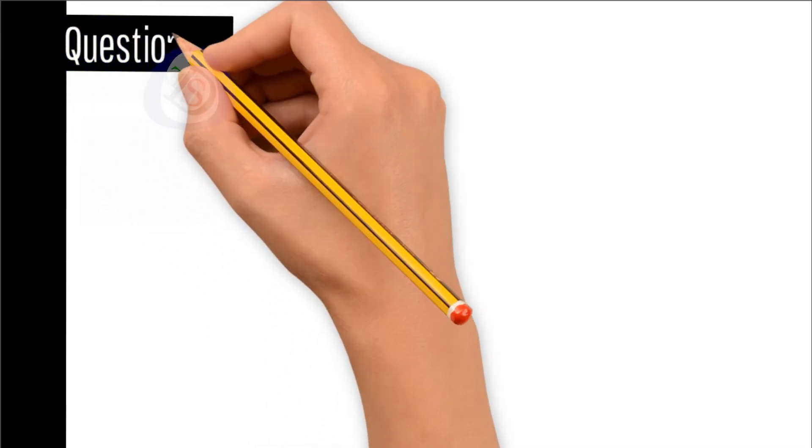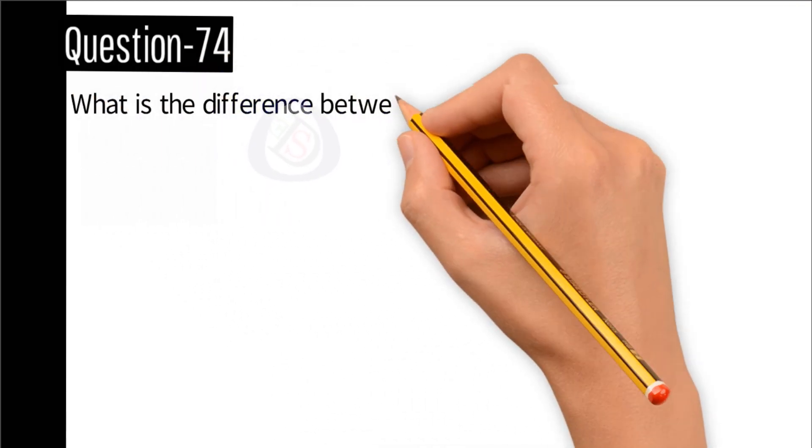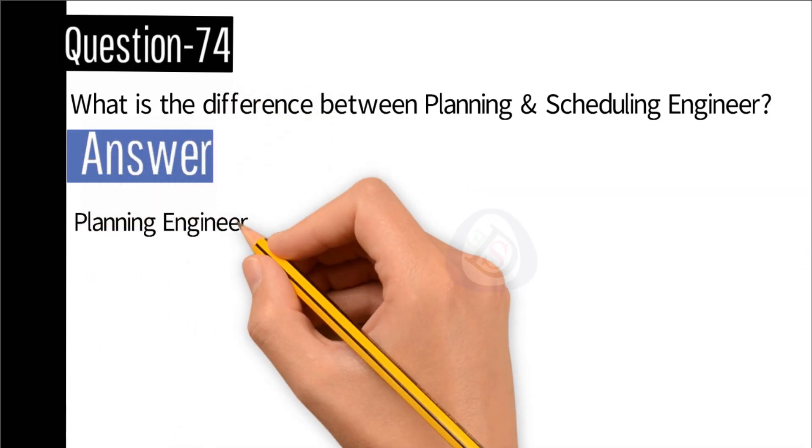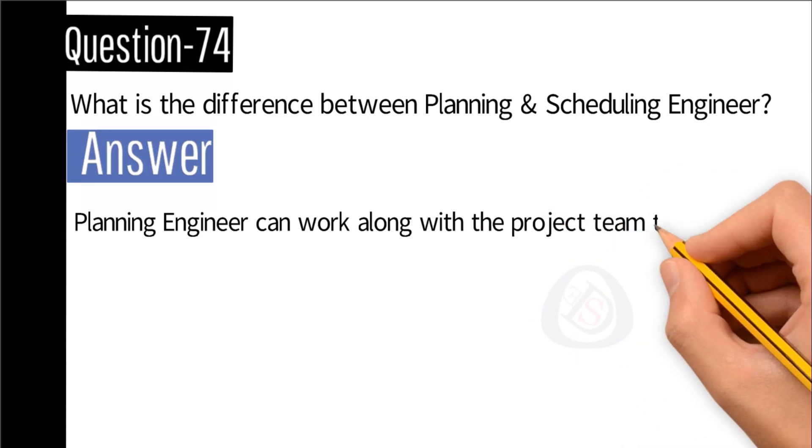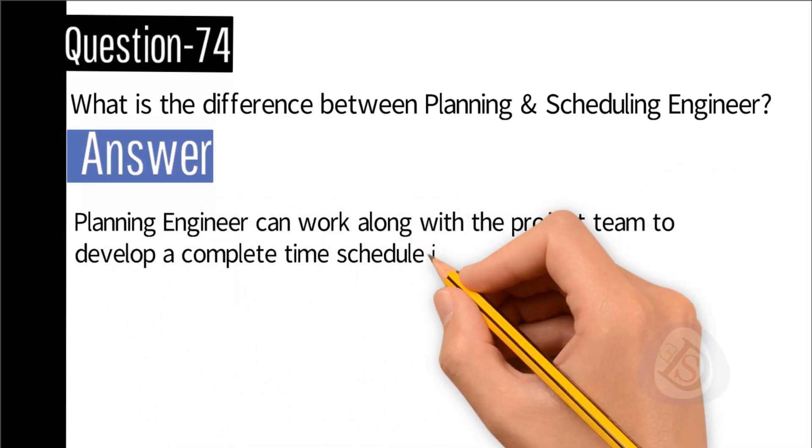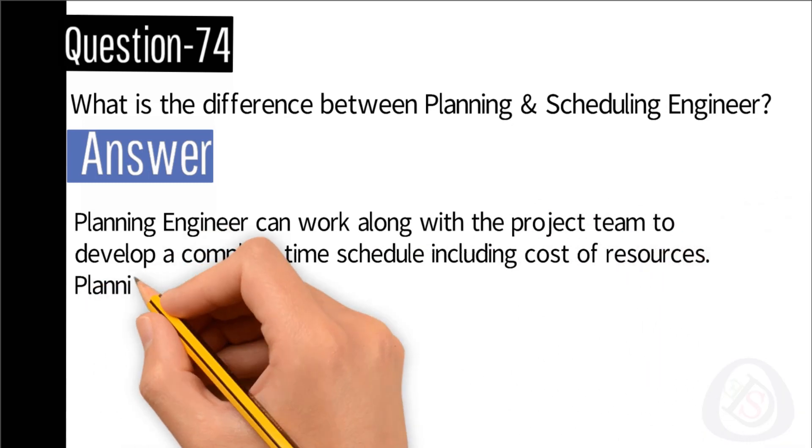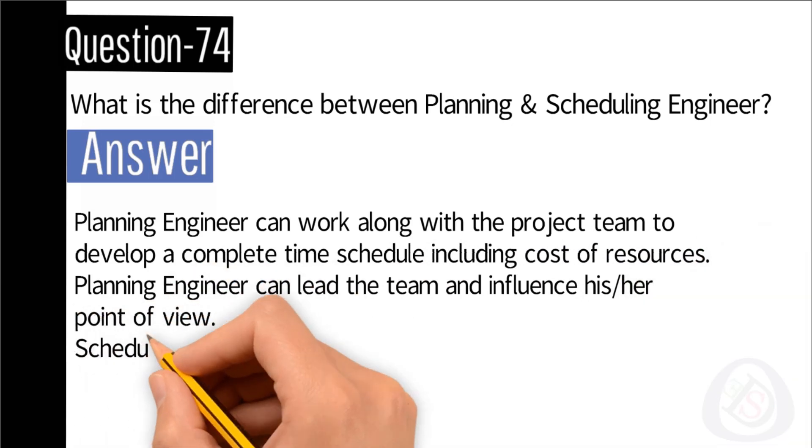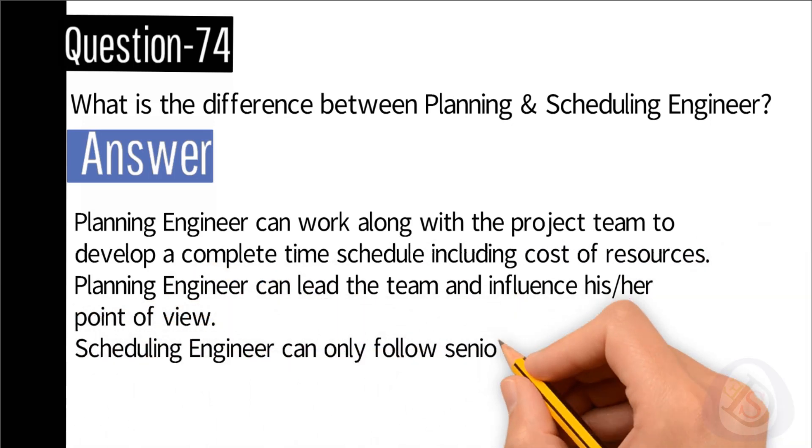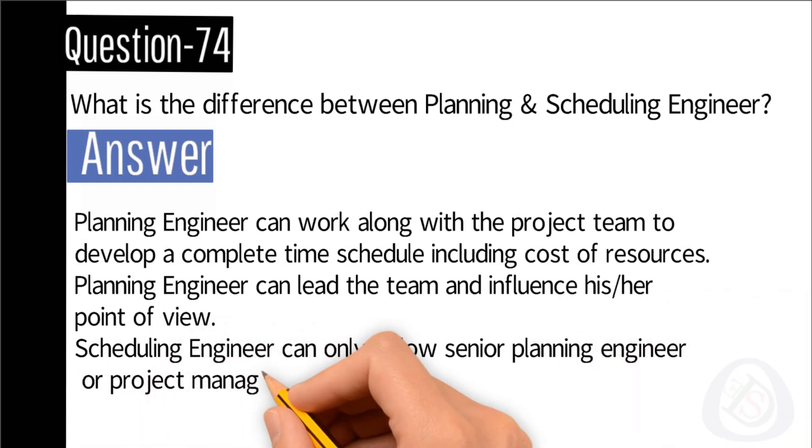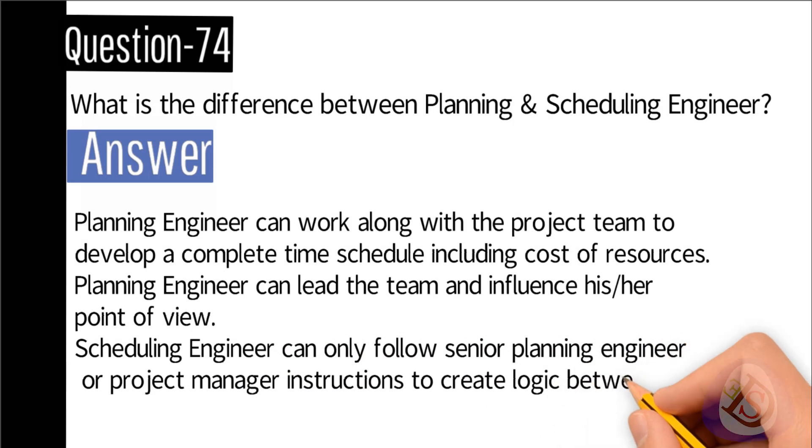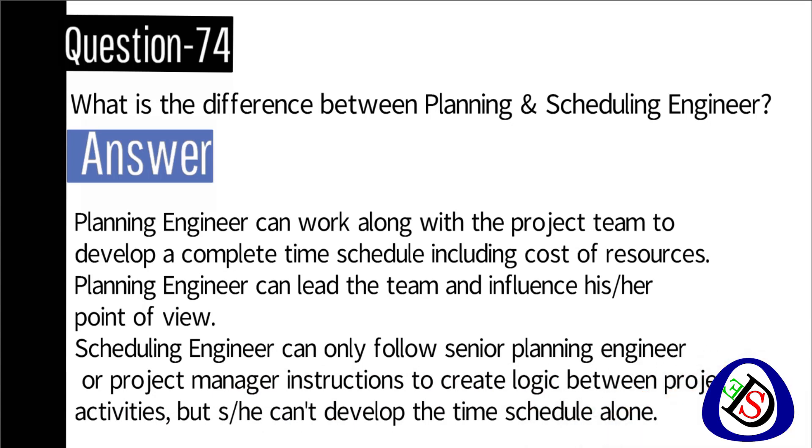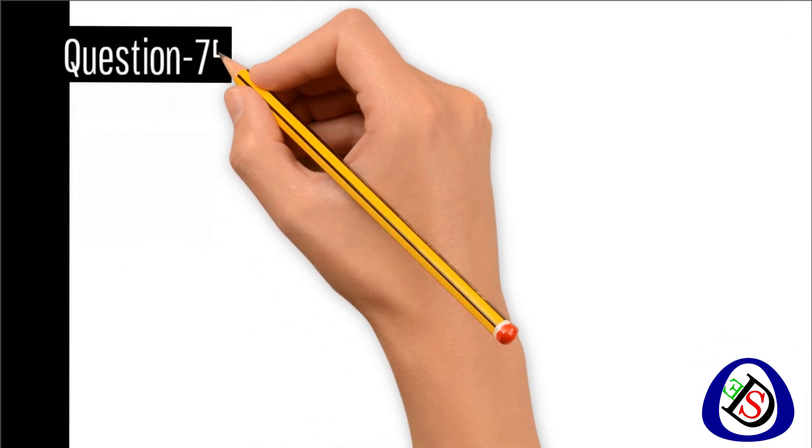Question number 74: What is the difference between planning and scheduling engineer? Answer: Planning engineer can walk along with the project team to develop a complete time schedule including cost of resources. Planning engineer can lead the team and influence his or her point of view. Scheduling engineer can only follow senior planning engineer or project manager instruction to create logic between project activities, but he or she cannot develop the time schedule alone.